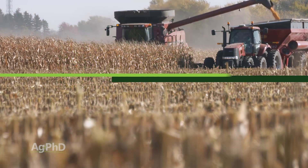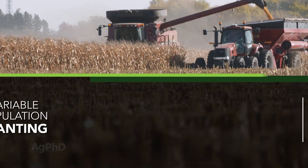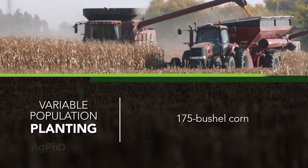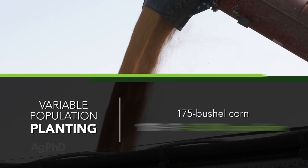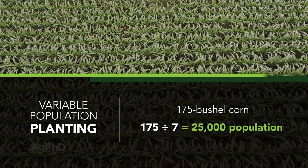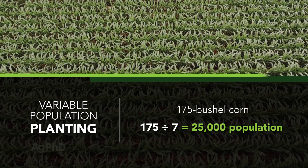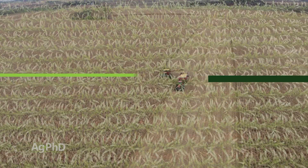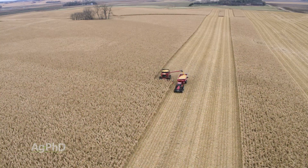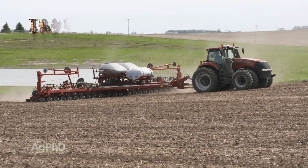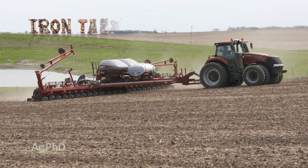Now, if poor areas of that same field were yielding 175 bushels — for example, instead of 210 — we'll take 175 divided by 7 to get a target population of 25,000. Once you get above 300 bushel yields or below 100, your figures may change, but in the meantime, good luck as you set variable populations for 2020.